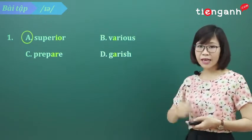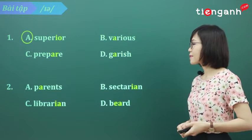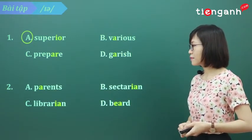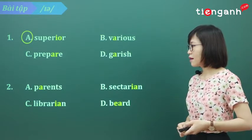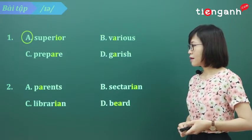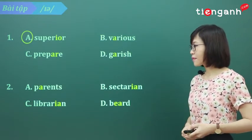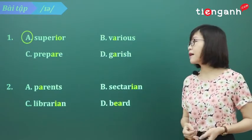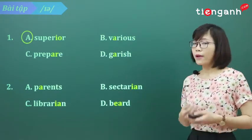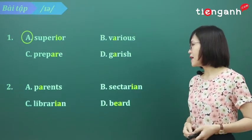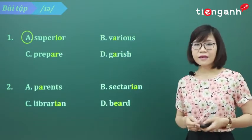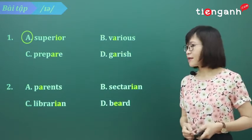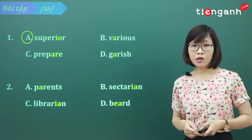Chúng ta quan sát nhóm thứ 2 nhé. Listen carefully. A: parents. B: sectarian. C: librarian. And D: beard.